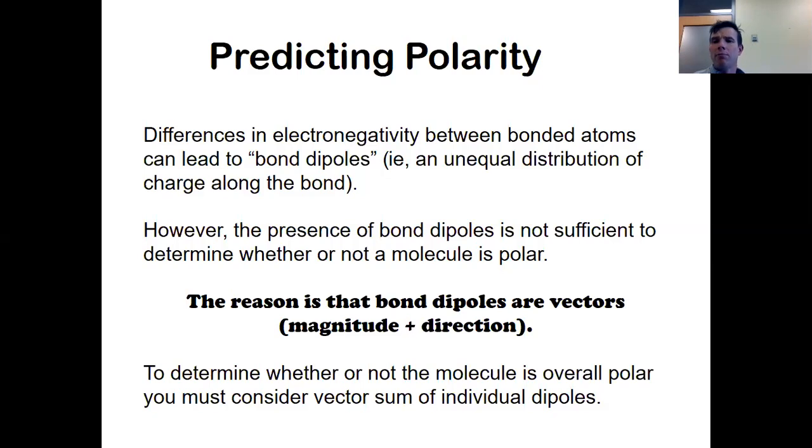However, the presence of bond dipoles is not sufficient to determine whether or not a molecule is polar. The reason is that dipoles are vectors. Bond dipoles are vectors. That is, they have a magnitude and a direction. And if I have one atom which is pulling electrons this way, and another atom pulling electrons this way, those would be equal and opposite, and they'd cancel one another. So they're vectors. And in order to figure out whether or not a molecule is overall polar, you have to consider the vector sum of individual dipoles.